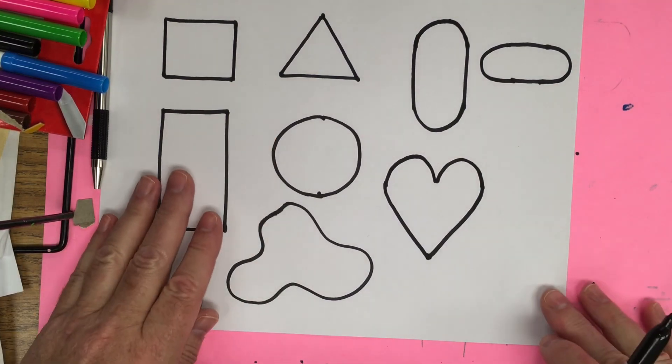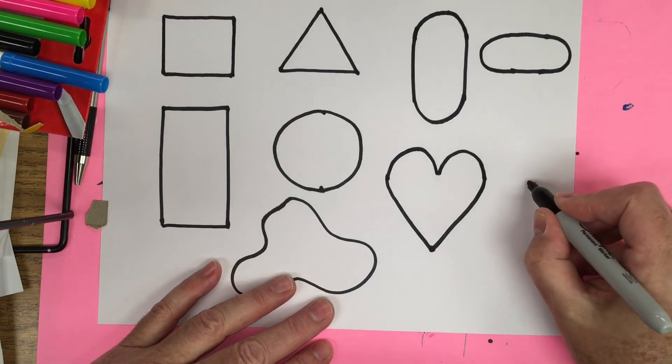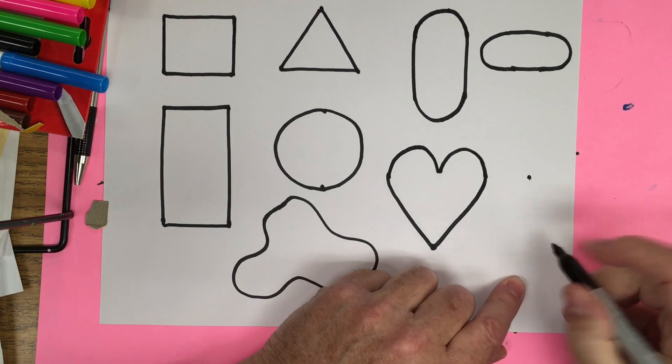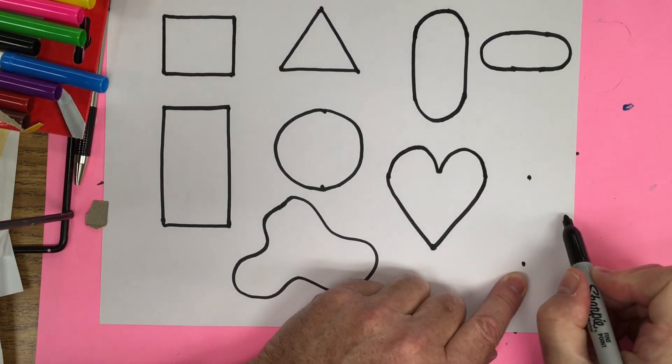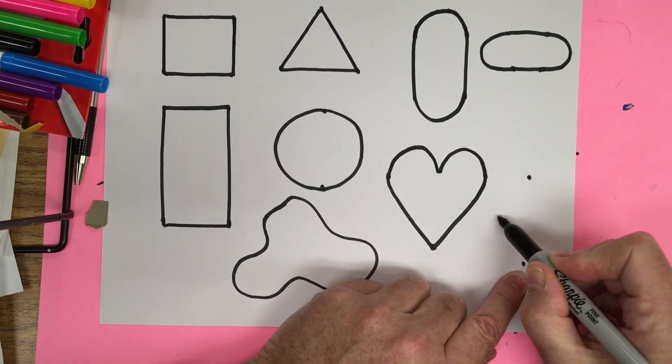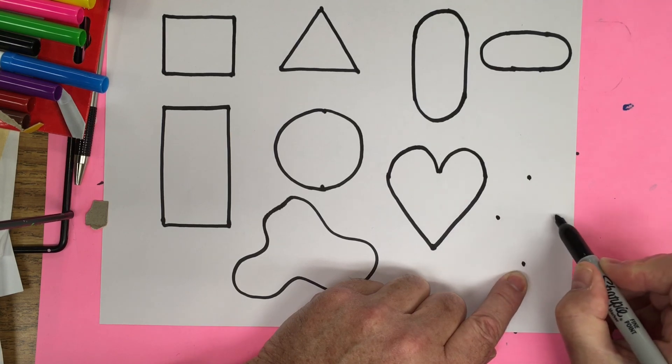And the last shape we're going to do is a diamond shape. If you start off putting a dot, drop down, put another dot. Now in the middle, find the middle, top, bottom, middle. I'm going to jump over this side and put a dot. And then I'm going to jump directly across this side and put a dot.